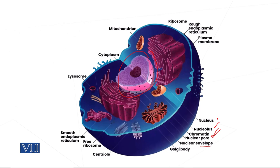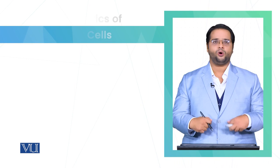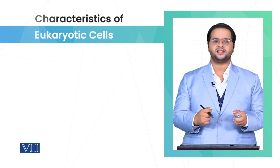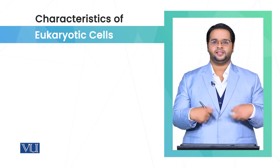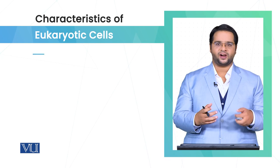This is the generalized eukaryotic animal cell. We are going to further explore its characteristics in detail. Now we are going to discuss about the characteristics of the eukaryotic cell.